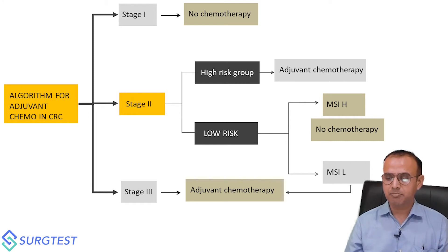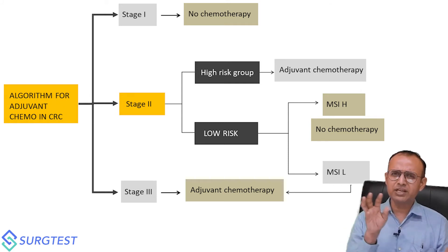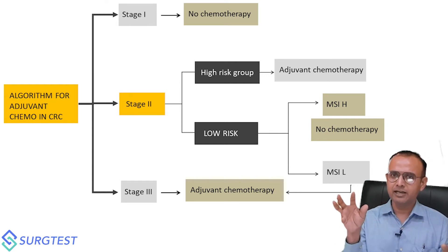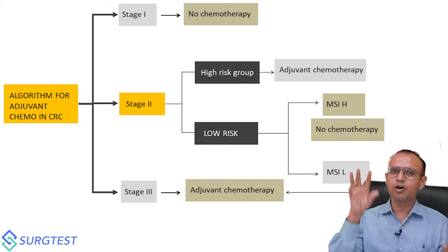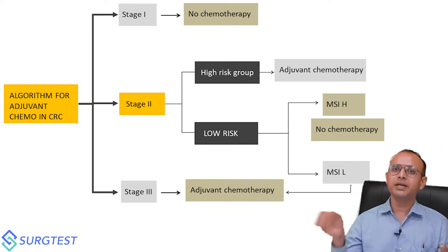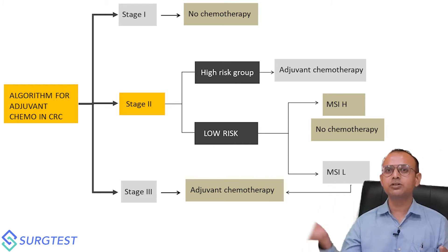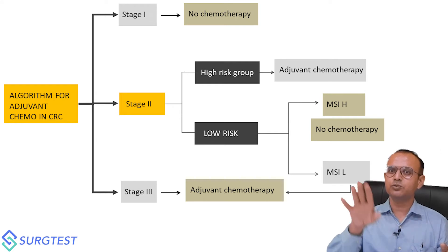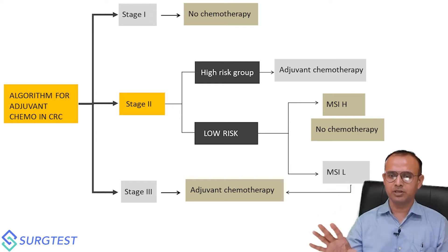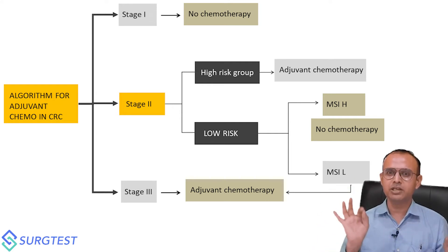The most important and confusing scenario: if the patient is low risk with no high-risk features, and MSI is high, chemotherapy can be avoided. If MSI is low or MSI stable, the patient needs chemotherapy. Studies have shown that in MSI-high patients, chemotherapy does not benefit, or the benefit is less than the complications. So selectively in stage two low-risk MSI-high patients, chemotherapy should be avoided.